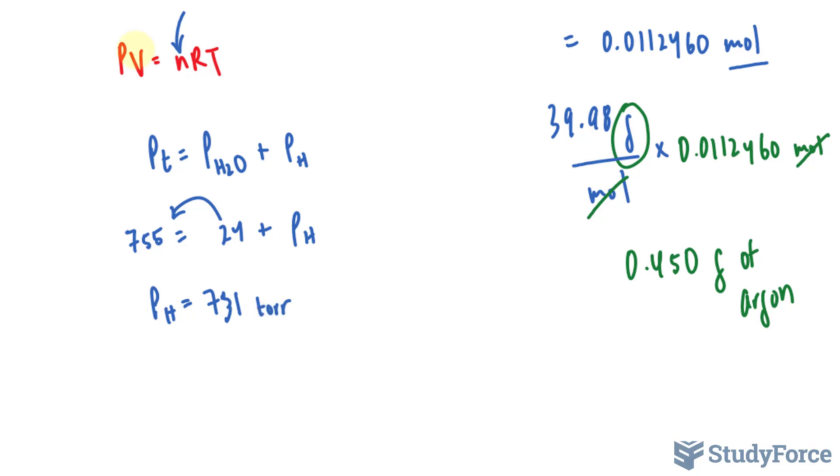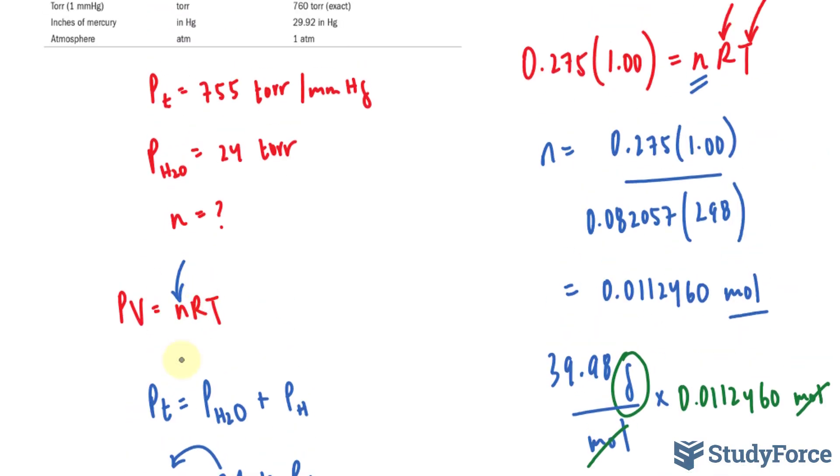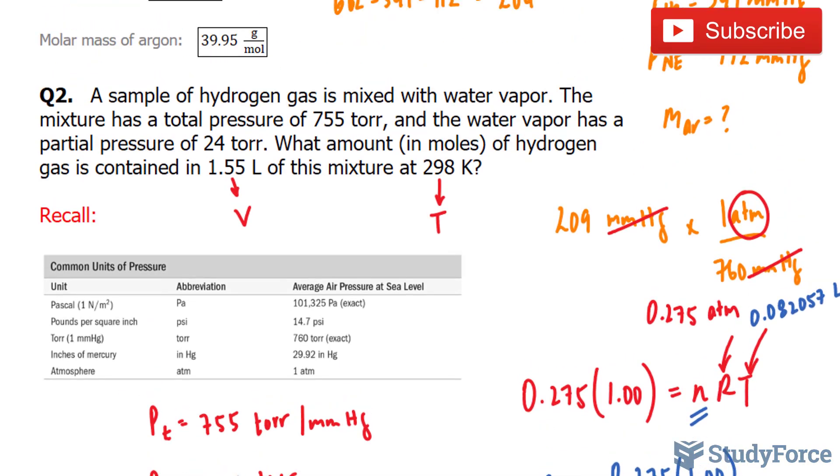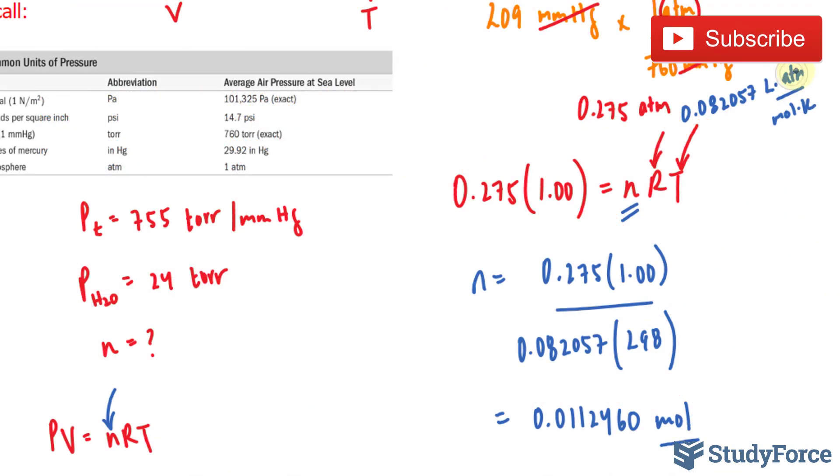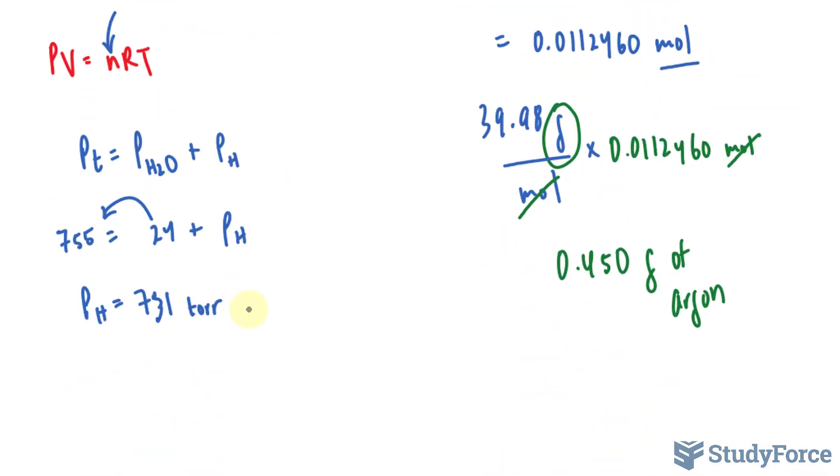In order to use this formula, PV is equal to nRT, I need to convert 731 torr into atmospheres. And the reason why is because part of this formula, this R, is a gas constant. And the gas constant from question number one has the units L times atmosphere over moles times Kelvin. So notice that it's in atmosphere and in Kelvin and liters and moles, so they all have to match. Our partial pressure right now is in mmHg, so that needs to be changed. I will multiply this by 760 torr at the bottom and 1 atmosphere at the top.